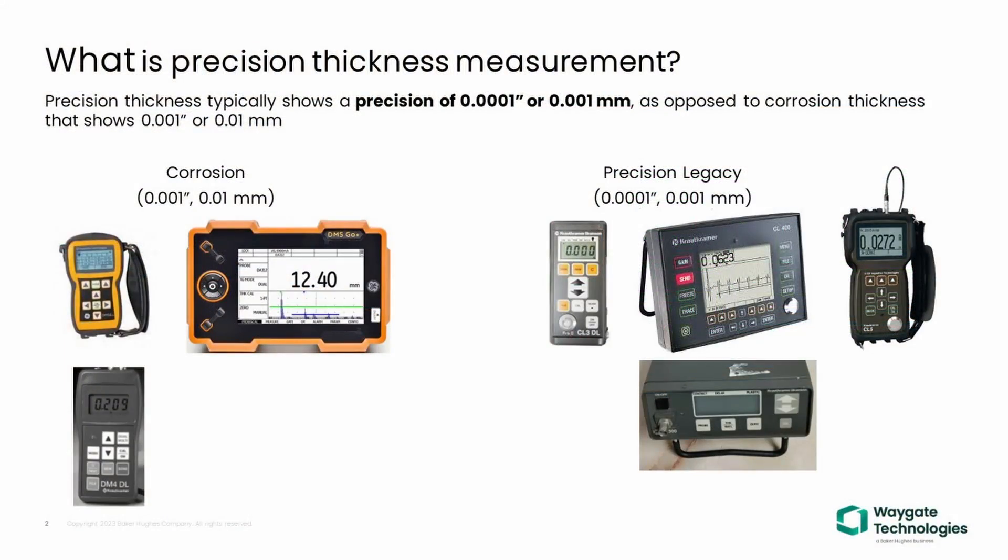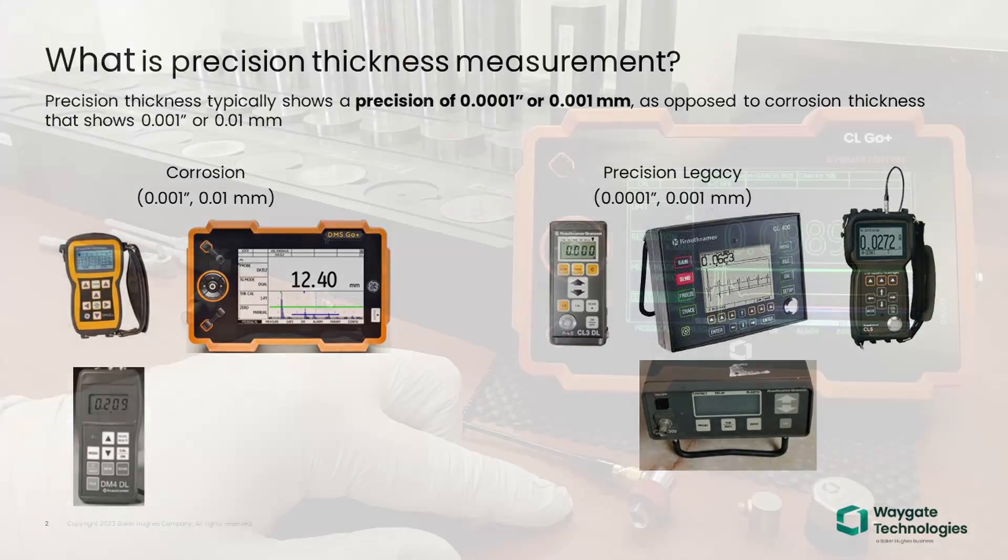When we discuss precision measurements, we're talking about precision of microns, 0.001 millimeters or tenths of one thousandths of an inch, 0.0001 inches precision.